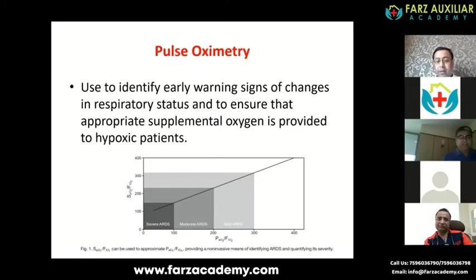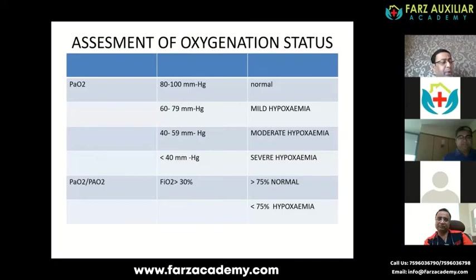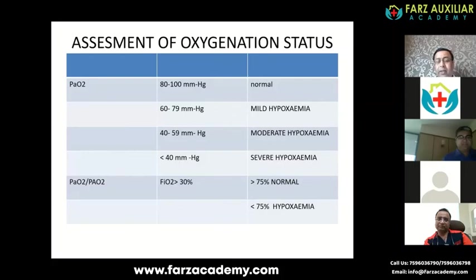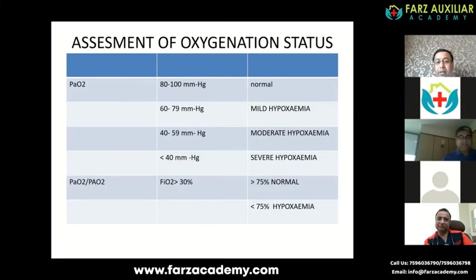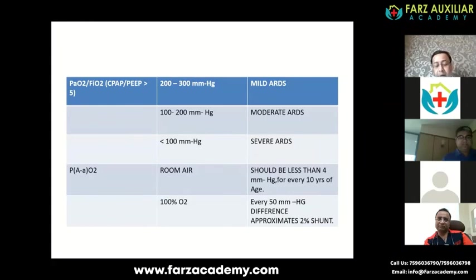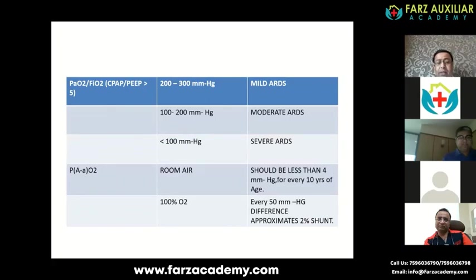The normal PaO2 is around 80–100 mmHg; mild hypoxia is less than 80, moderate less than 60, and severe less than 40. More importantly, the PaO2/FiO2 ratio — where FiO2 greater than 75% is normal and less than 75% indicates hypoxemia — is used to define ARDS: less than 300 is mild, less than 200 is moderate, and less than 100 is severe ARDS. Whether the patient is ventilated for restrictive, obstructive, pneumonia, heart failure, or any other reason, the PaO2/FiO2 ratio is critical to understand.